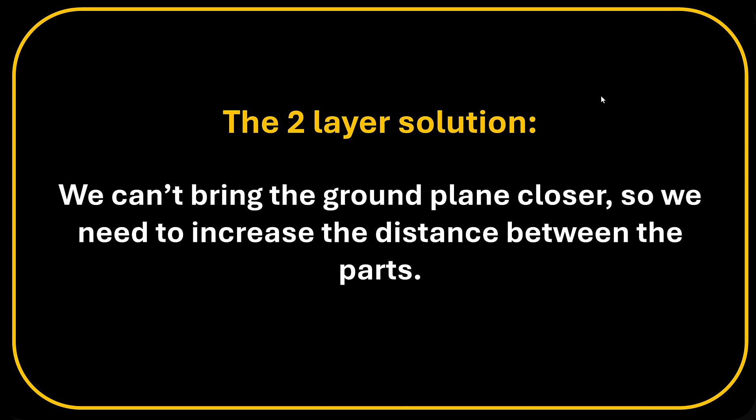So what is a two layer solution? Well, in a two layer, we cannot bring the ground plane closer. We could choose to go for a 0.8 millimeter board, but I don't really like these because they're really flimsy. They're really bent quickly. So I'm always worried about SMT components breaking. So let's assume we don't want to do that. Then we have to increase the distance between the parts.